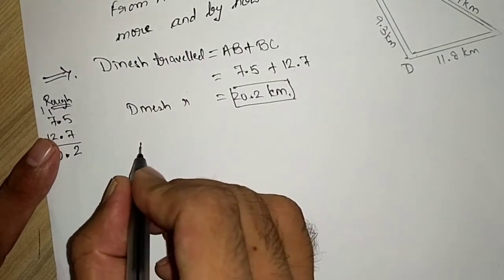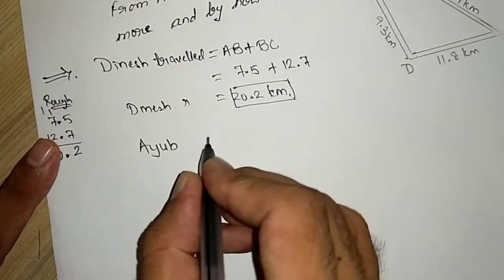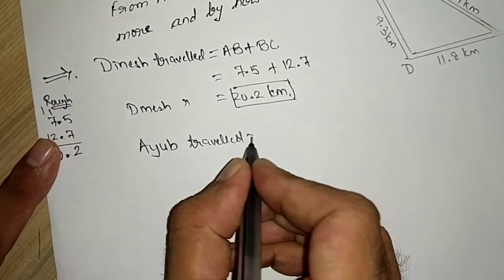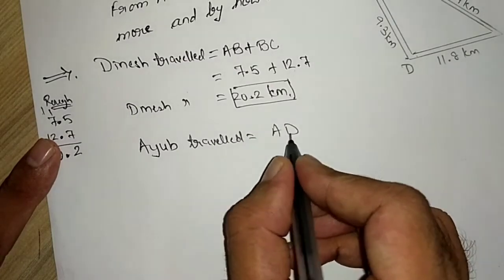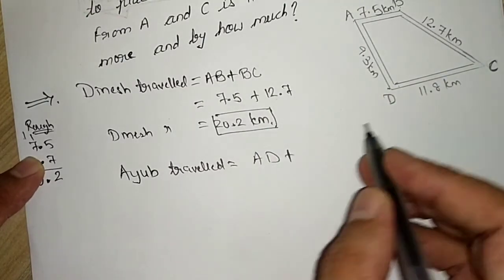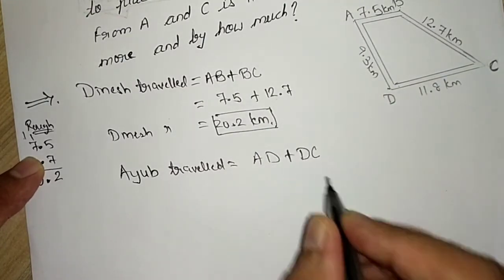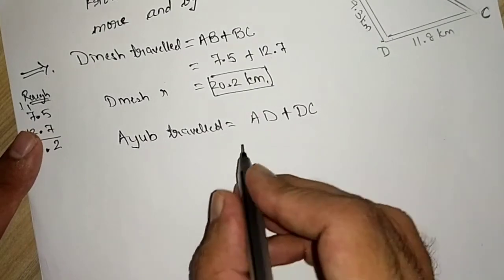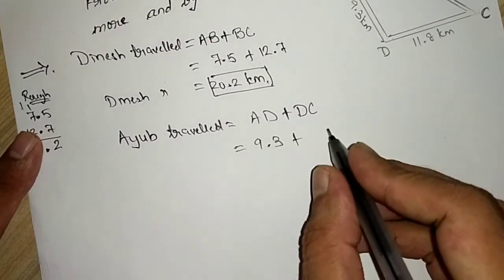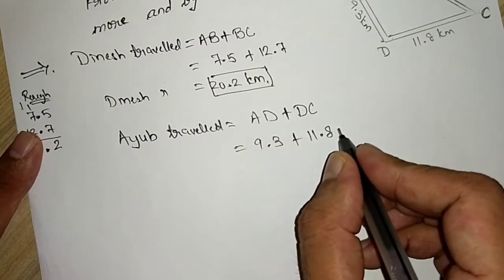Now, let us calculate Ayub. Ayub travelled, first he travelled from A to D, distance A to D, and then from D to C, distance DC. What is A to D? 9.3 km plus DC is 11.8 km.